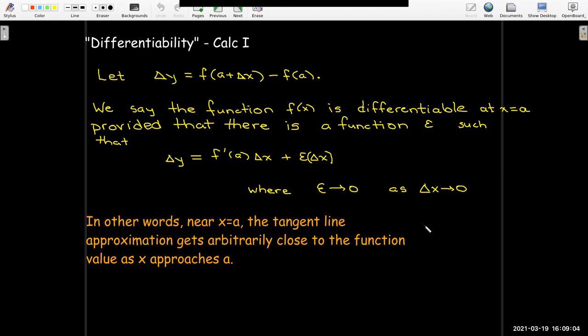What we're saying is that my change in y along the function is essentially going to be the change on the tangent plane plus a little bit of an error. And we're going to say it's differentiable if the error goes to zero as Δx goes to zero. In other words, we want the tangent line approximation to get arbitrarily close to the function value as x approaches a. But really, all this boils down to in Calc 1 is that if f'(a) exists, f is differentiable at a. That's all we need.